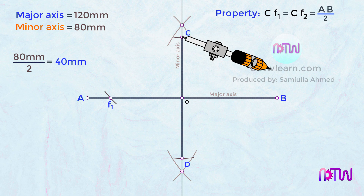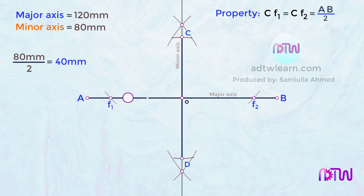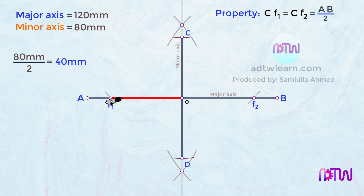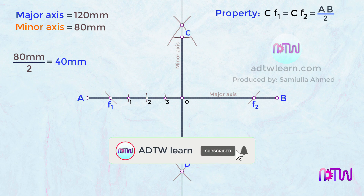Similarly, mark an arc on line AB on the other side — this point will be our focus F2. Next, mark some points on the major axis between points F1 and O. The distance between the points can be anything; take a compass and mark some points on this line. Name these points as 1, 2, and 3.